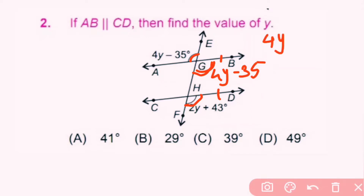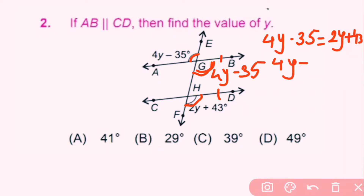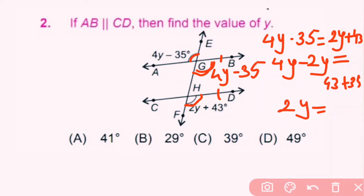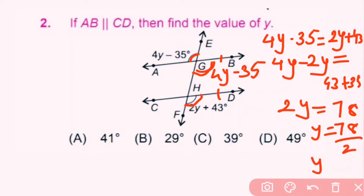So 4y minus 35 equals 2y plus 43. Taking 2y to the left side and 35 to the right side: 4y minus 2y equals 43 plus 35, which gives 2y equals 78. Therefore y equals 78 divided by 2, which is 39. Y is 39 degrees. C is the correct answer.